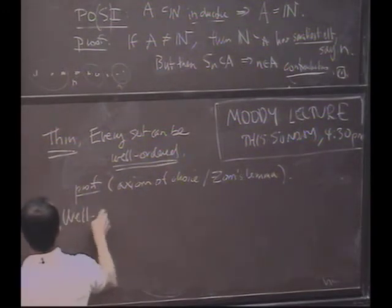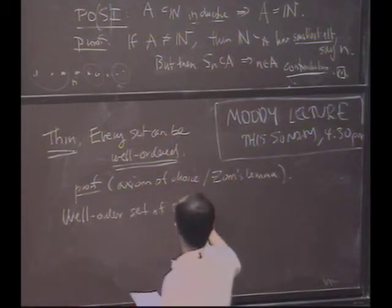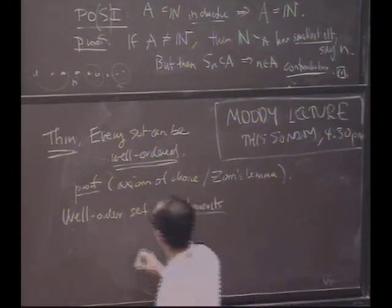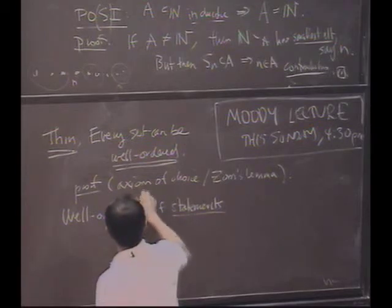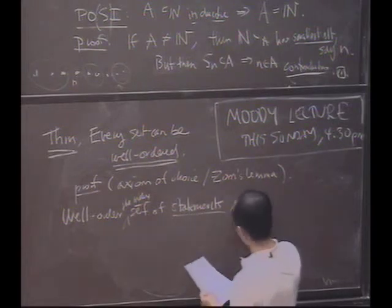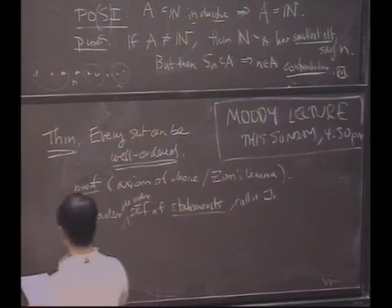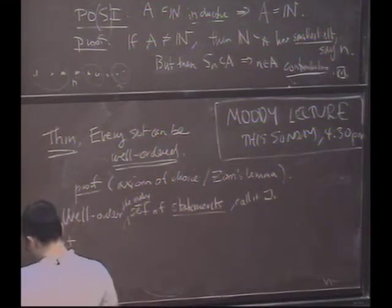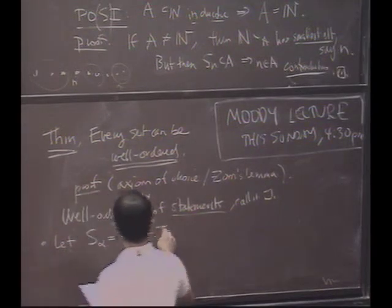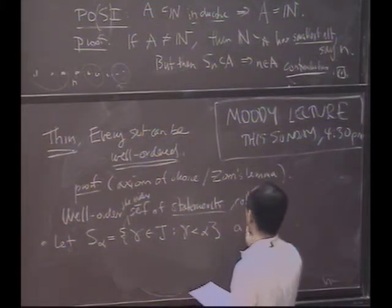So, here's what we're going to do. Let's well-order the set of statements we're trying to prove. Okay, or well-order the index set. Okay, let's call it J. Then, everything I set above is going to hold, except I'll just call S sub alpha, the set of all indices, gamma, where gamma is less than alpha. A section.